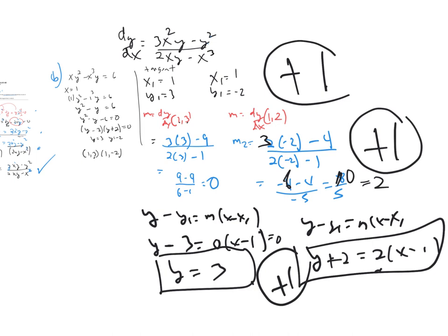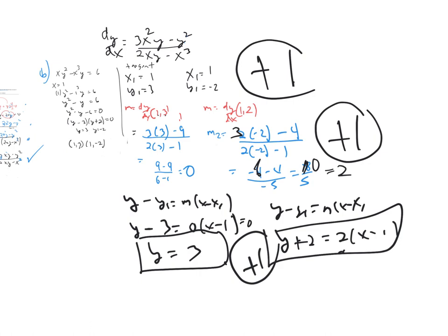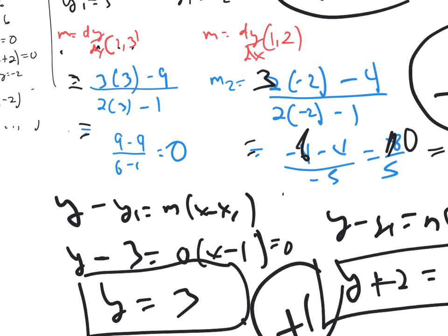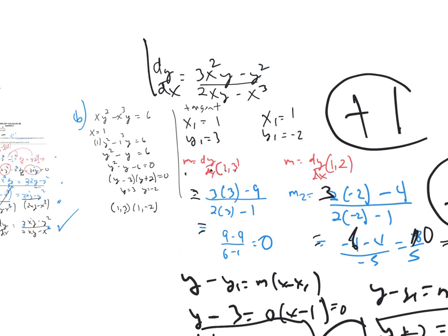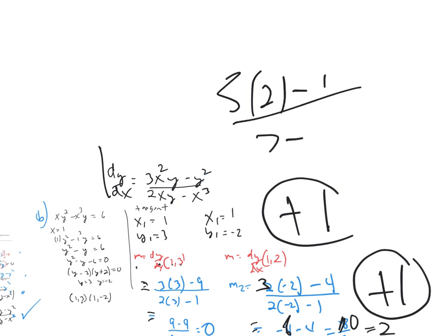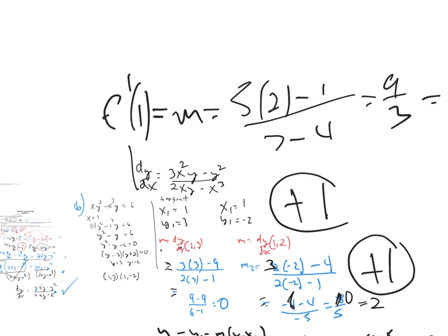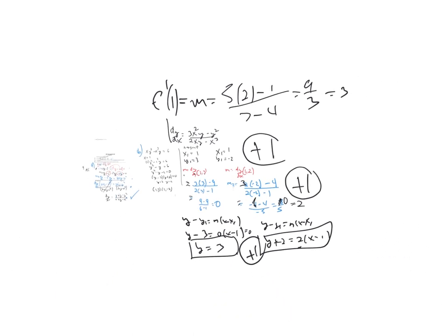For those of you that have trouble communicating on your AP exam: look how every section has a purpose and there's full communication. I've written the full formula out — M equals, M2 equals. You need to identify what everything is. You can't just put 5 times 2 minus 1 over 7 minus 4 and say 9 over 3 with no context. If it's a derivative, say it's the slope. If it's F prime at 1, say F prime at 1. That was Part B.